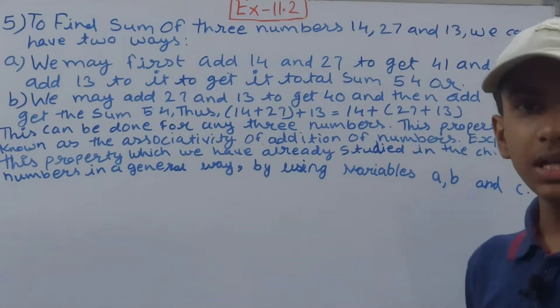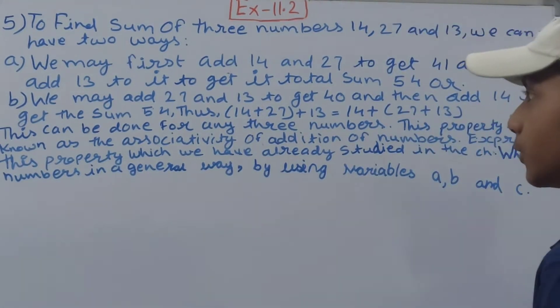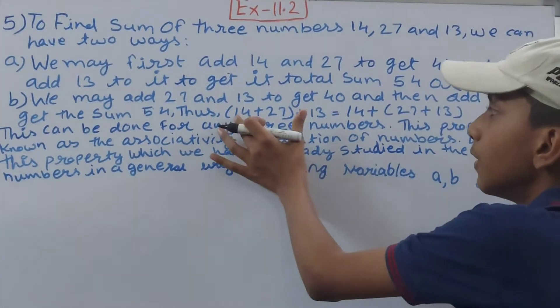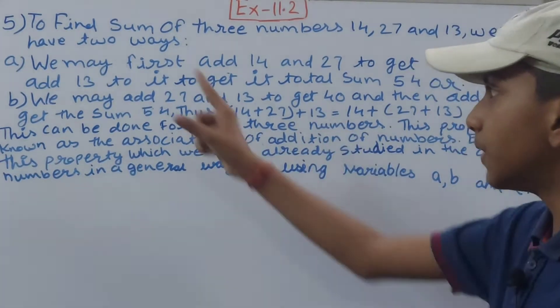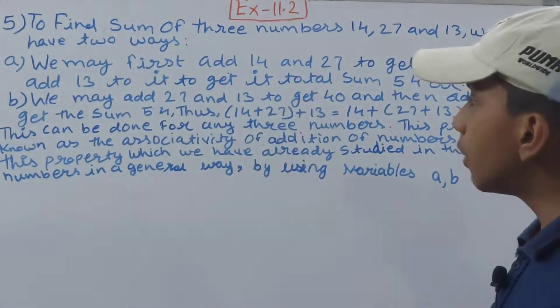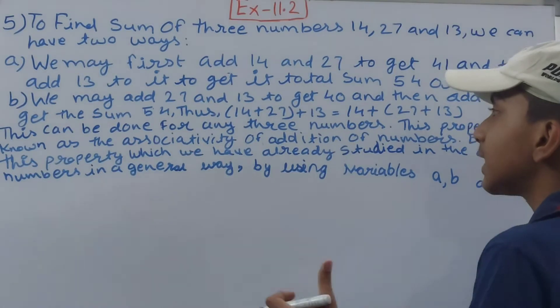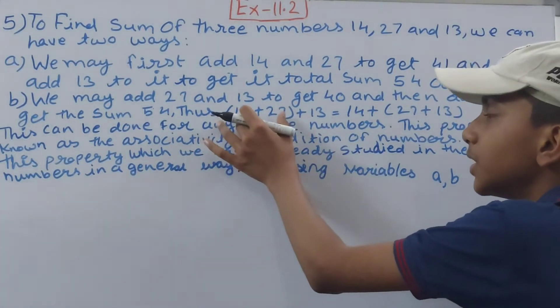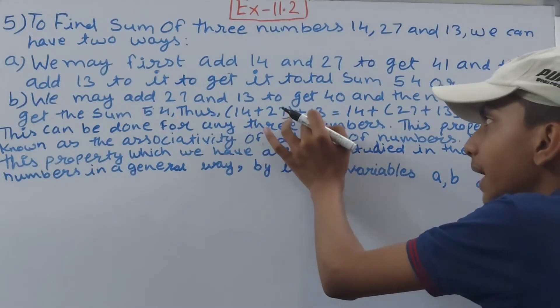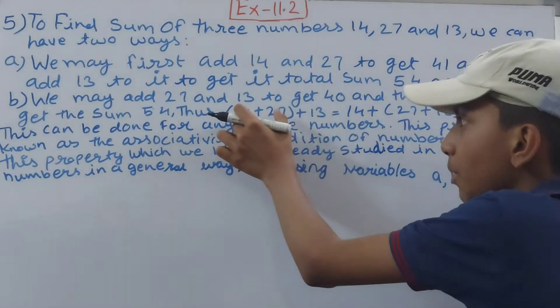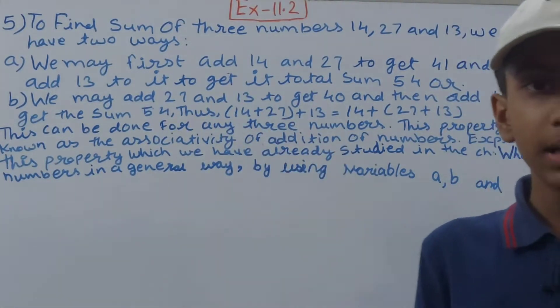If you look here: (14 + 27) + 13, this is the first method which we have studied. So what does this indicate? It indicates that you add the numbers in the brackets first, and then add the number outside the bracket to the sum of the numbers in the bracket. So first solve the brackets - add 14 and 27 - then add 13 to their sum. This will be 54.